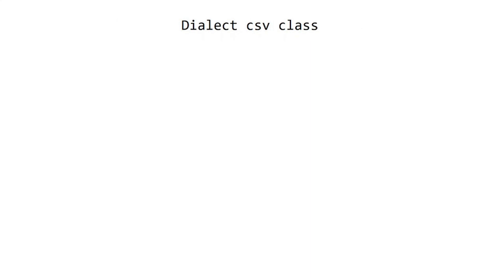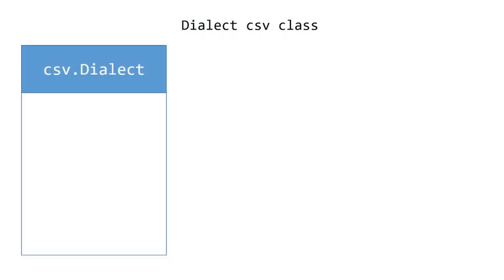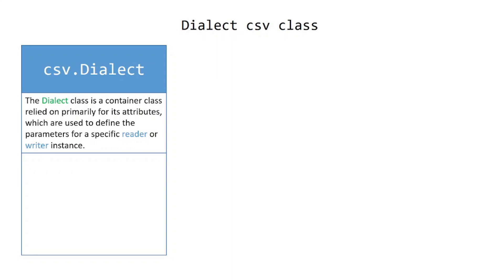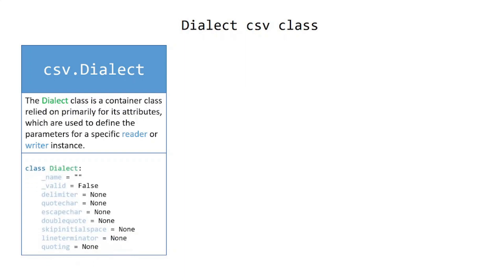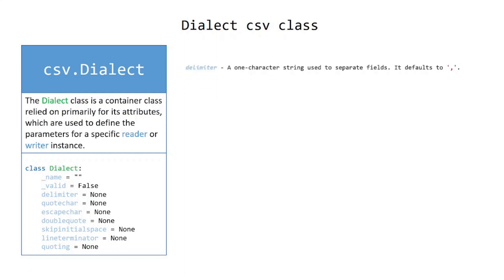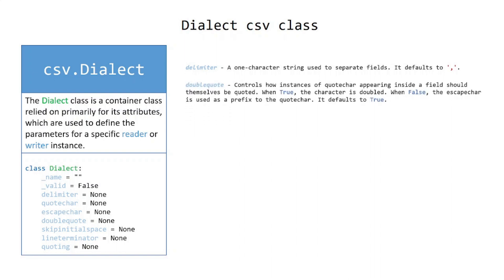Dialect CSV class: the dialect class is a container class relied on primarily for its attributes, which are used to define the parameters for a specific reader or writer instance. Default parameters include: delimiter — a one-character string used to separate fields, defaults to comma. doublequote — controls how instances of quotechar appearing inside a field should be quoted. When true, the character is doubled; when false, the escapechar is used as a prefix to the quotechar. Defaults to true.